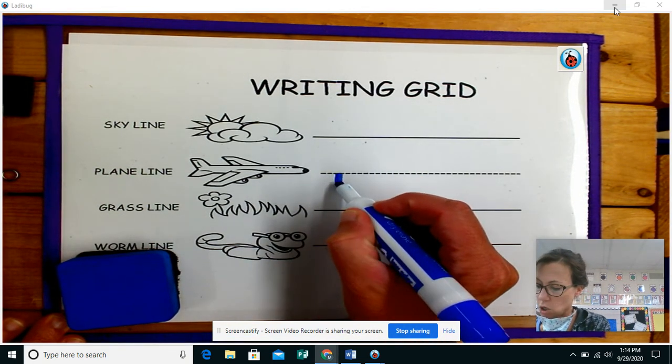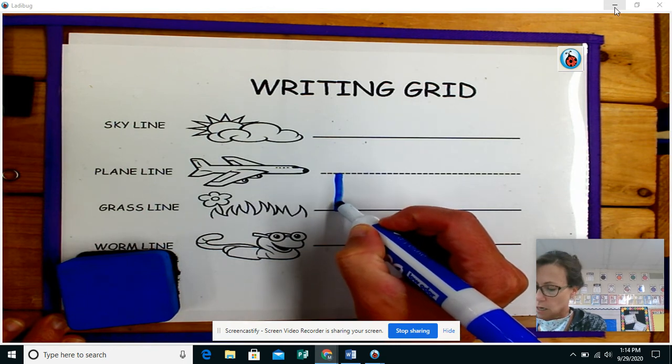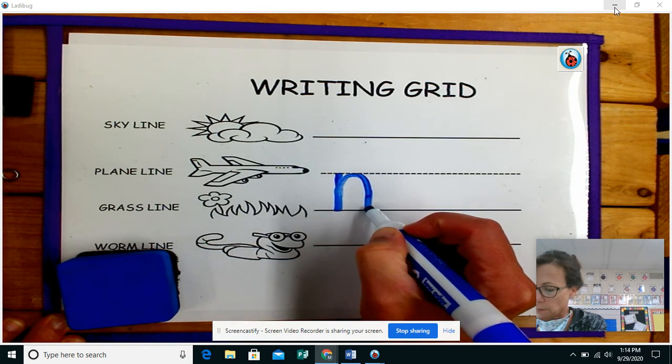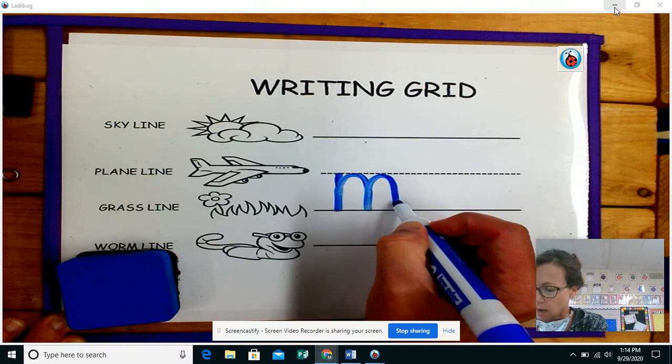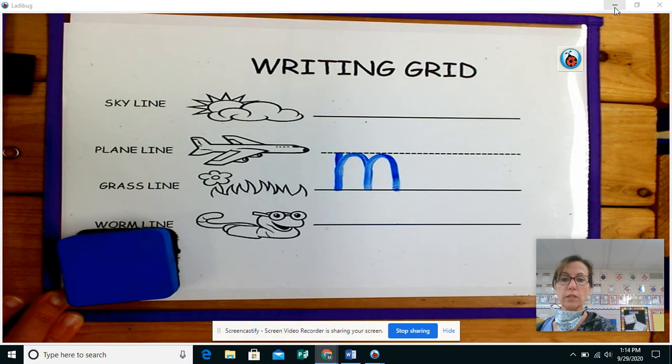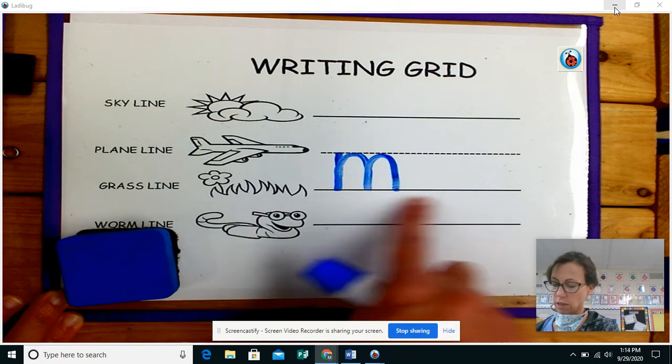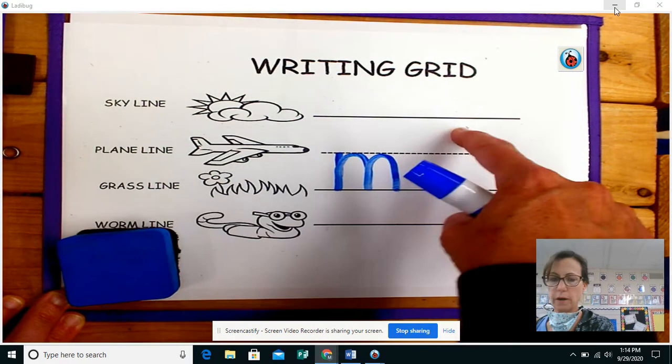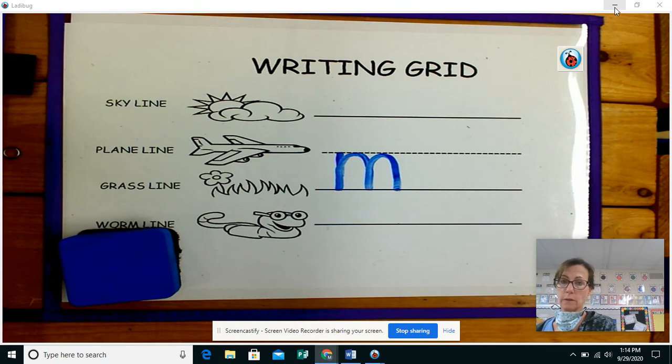Watch me go down to the grass line. Do not lift up your marker, trace up, hop, trace up, hop. Okay. And if you're done, if you want to check your work, you have nothing below the grass line, nothing above the plane line. That's a perfect M.